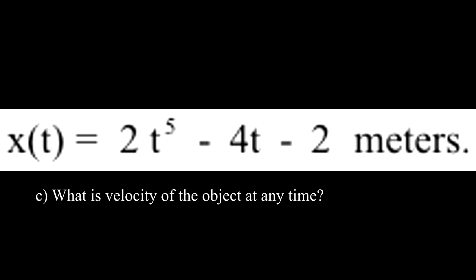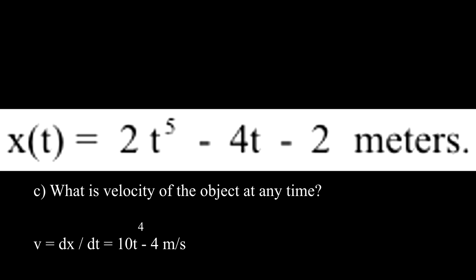Question C. What is the velocity of the object at any time? Writing the derivative, v equals dx dt, we get 10t to the 4th minus 4 and this is measured in meters per second.